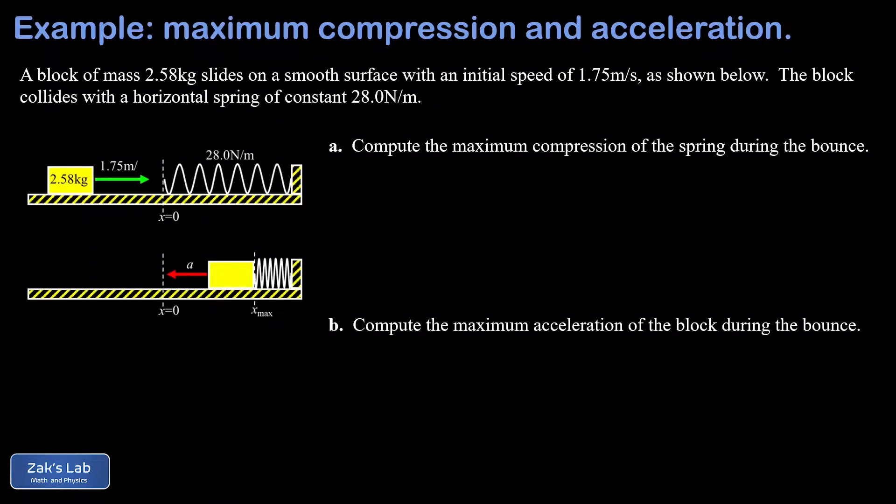In this video we're looking at a block and spring problem where this block is sliding with an initial speed of 1.75 meters per second. It has a mass of 2.58 kilograms. We know the spring has a spring constant of 28.0 newtons per meter and we're not dealing with any friction on the surface here.